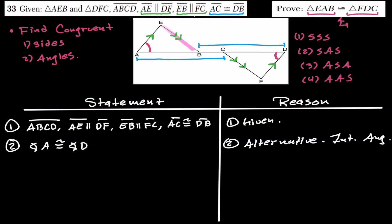Considering the other set of parallel lines EB and CF with the same transversal, angle EBA and angle DCF are alternate exterior angles and are therefore congruent to each other.